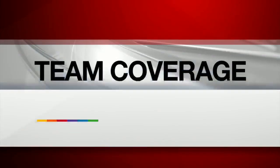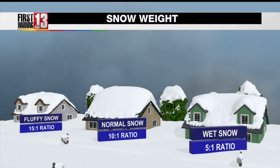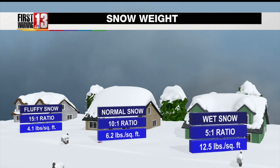The big difference when it comes to heavy wet snow and light fluffy snow has to deal with the amount of moisture inside that ratio. So if we take a look at our graphic, there's a 15 to 1 ratio when it's light and fluffy, the typical 10 to 1, and when it's the heavy wet snow like what we'll be seeing, it's 5 inches of rain for every 1 inch of snow. So it's damp, it's heavy.